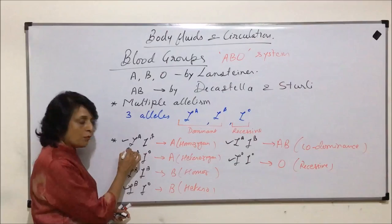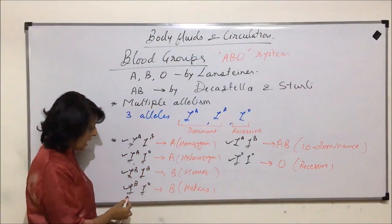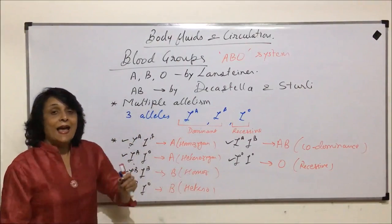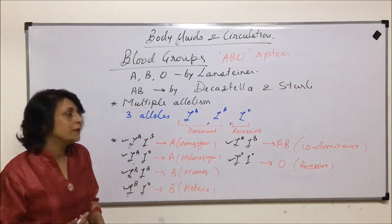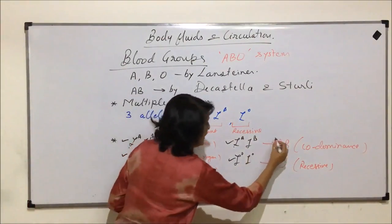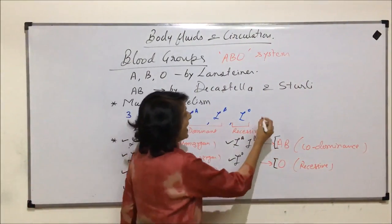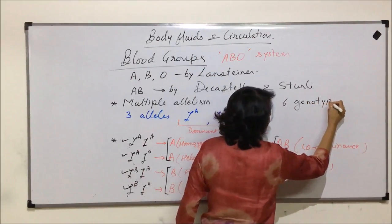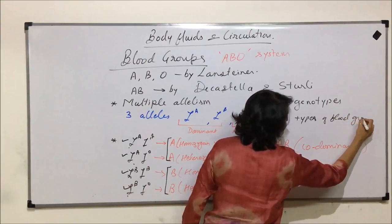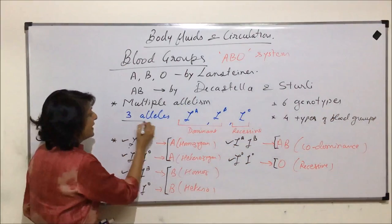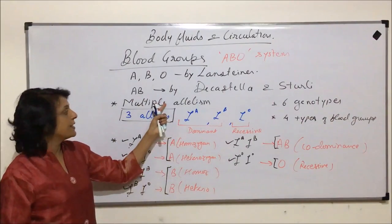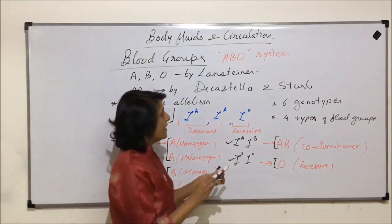The six genotypes are: IA IA (homozygous A), IA IO (heterozygous A), IB IB (homozygous B), IB IO (heterozygous B), IA IB, and IO IO. In terms of phenotypes — blood group types — these six genotypes produce four blood groups: A, B, AB, and O. Three alleles give us six genotypes and four types of blood groups; that is why it is an example of multiple allelism.